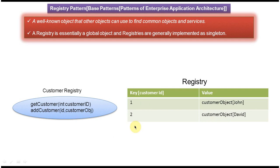Suppose you want to add a customer object in the registry — you call the addCustomer method, passing the ID (which is the key) and the customer object you want to add in the registry. Usually registries are implemented using some kind of map, either HashMap or LinkedHashMap.